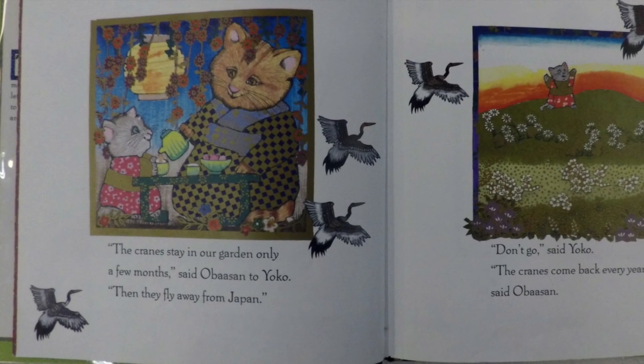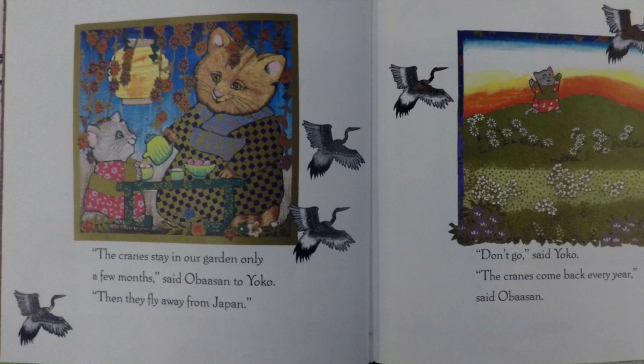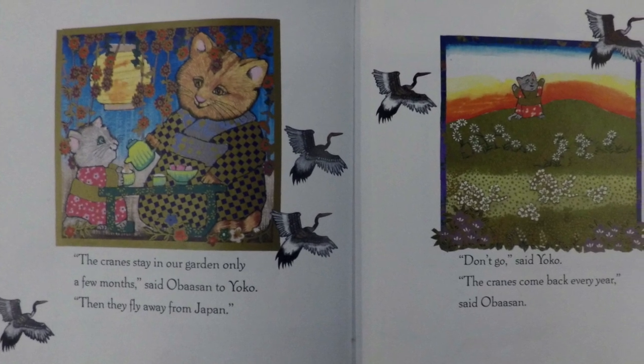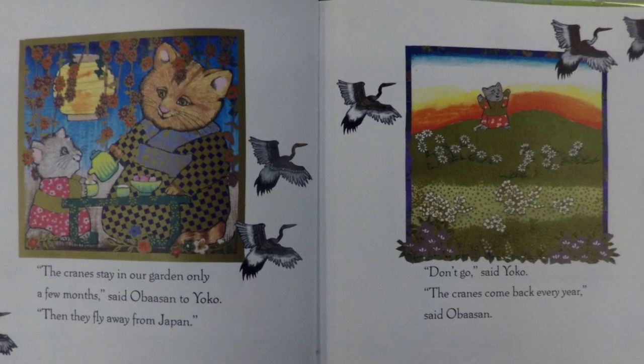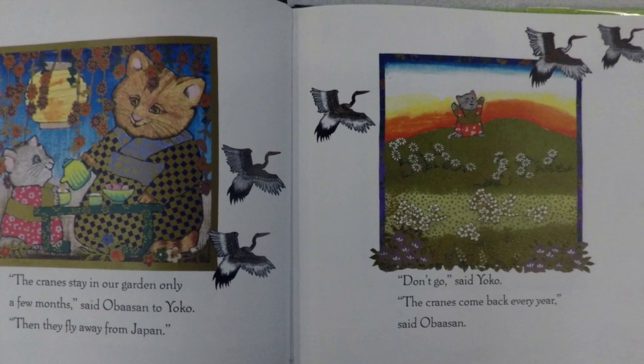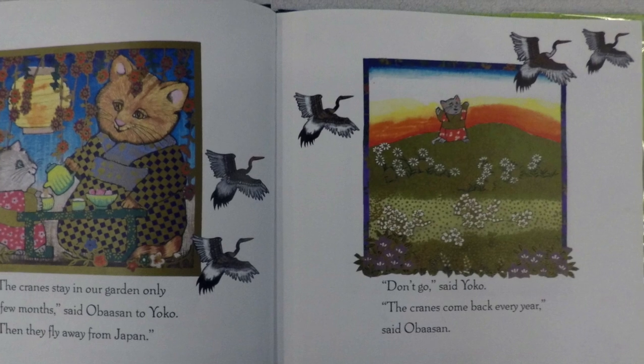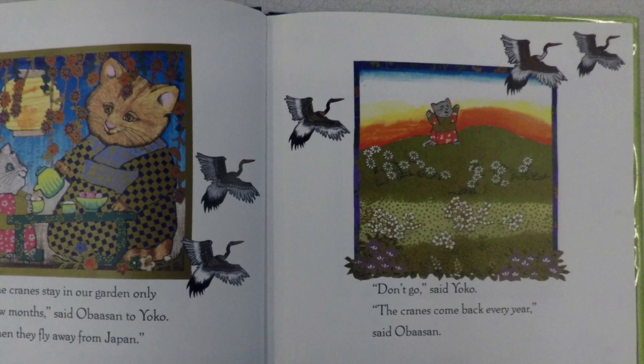The cranes stay in our garden only a few months, said Obasan to Yoko. Then they fly away from Japan. Don't go, said Yoko. The cranes come back every year, said Obasan.